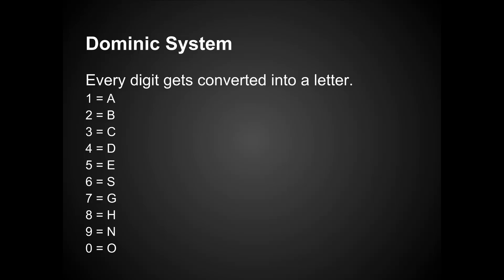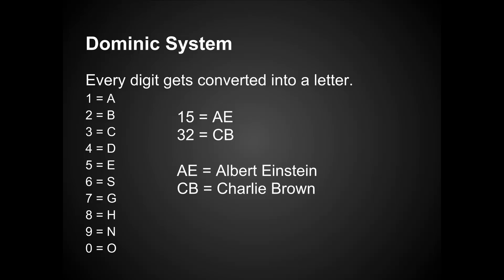So digits 1, 2, 3, 4, and 5 are just A, B, C, D, and E. When you get to 6, 6 starts with S. G is the 7th letter in the alphabet, H is the 8th letter, 9 is N, and 0 looks like an O. So you'd want to make a unique image for every two-digit number from 00 to 99 — you need 100 images. So 15 would be converted into A, E, and 32 would be converted into C, B. You would then use these as initials for a person — so A, E might be Albert Einstein, and C, B might be Charlie Brown.